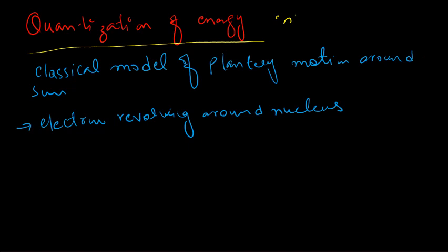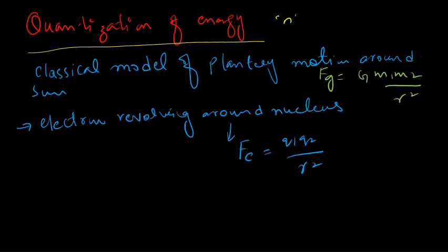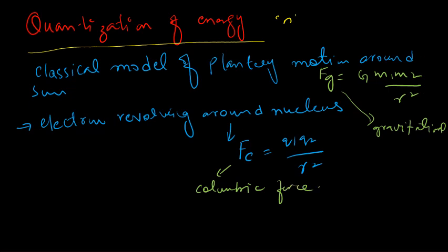Both — planetary motion and electron motion — are examples of the inverse square law. But the difference between them is that the motion of an electron around the nucleus is governed by the Coulombic force, which is equal to q1·q2/r², while planetary motion is governed by the gravitational force, G·m1·m2/r².